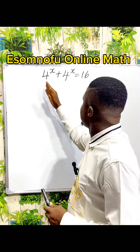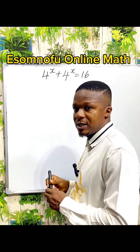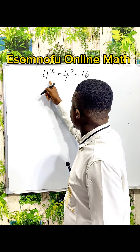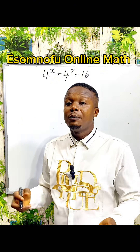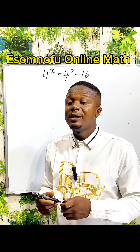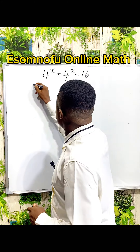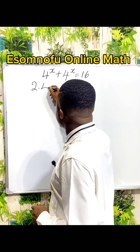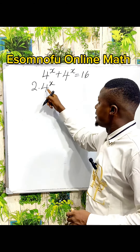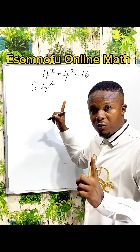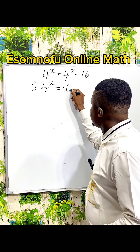Notice that this is 4 power x and this is also 4 power x. So 4 power x plus 4 power x means that this 4 power x is now in two places. You can call it 2 multiplied by 4 to the power of x, because the 4 power x is now doubled — no more 1. Everything is equal to 16.